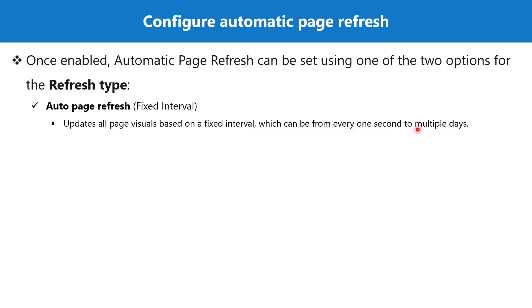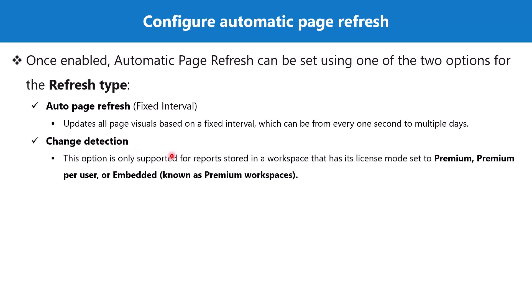So with the fixed interval option, the value can be set to work from one second to multiple days. The second refresh option is change detection, and this option is only supported for reports stored in a workspace with the license mode set to Premium, Premium Per User, or Embedded — what we call premium workspaces.